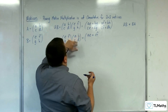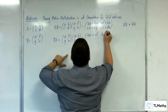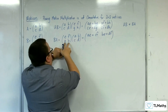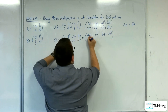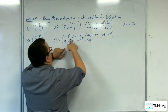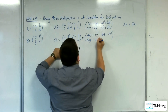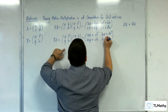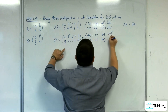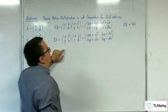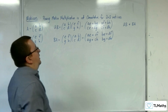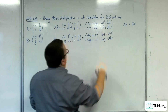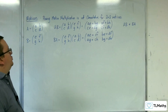So we've got EF times BD, giving BE plus DF. GH times AC gives AG plus CH. And then GH times BD gives BG plus DH. So in the bottom right-hand corner we've got the commonality of the DHs, but CF does not have to be the same as BG.